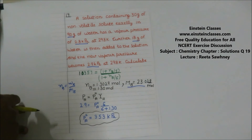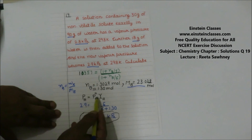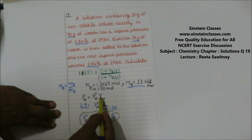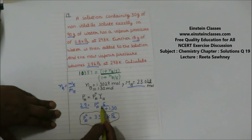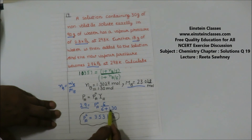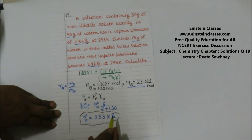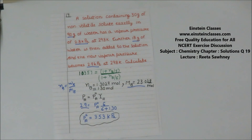The molar mass of the solute comes out to be 23 grams per mole. For our second aim — finding the vapor pressure of the pure solvent P⁰A — we use PA = P⁰A × XA again. When the total pressure is 2.9 kilopascal, moles of solvent are 6, so: 2.9 = P⁰A × (6 / (6 + 1.30)). Simplifying gives P⁰A = 3.53 kilopascal, which is the vapor pressure of pure water.